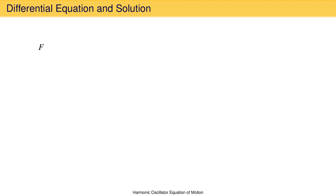Starting with Newton's second law means starting with force equals mass times acceleration. The force is the force acting on the object attached to the spring, the mass is the mass of the object, and the acceleration is the second derivative of displacement with respect to time. The physical origin of the force is the spring, and we know that the force it provides is proportional to the negative of the displacement of the object from its equilibrium position.